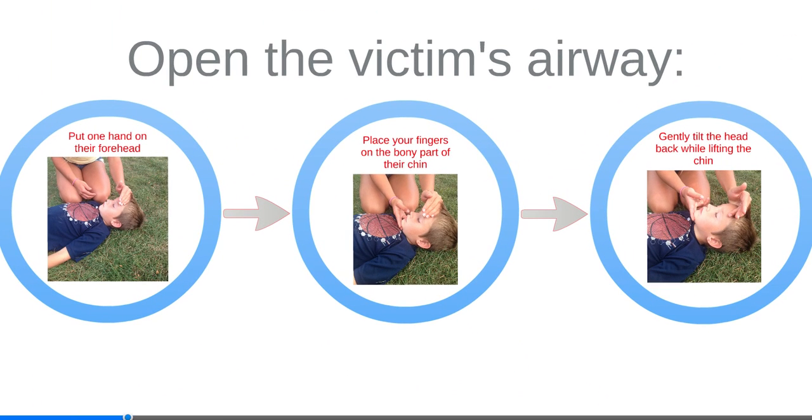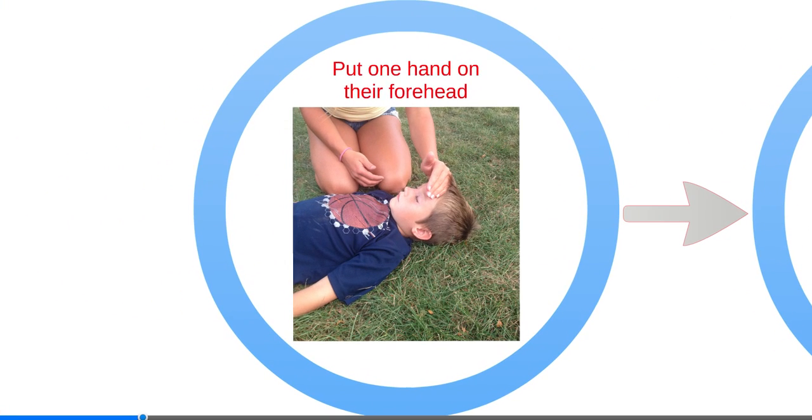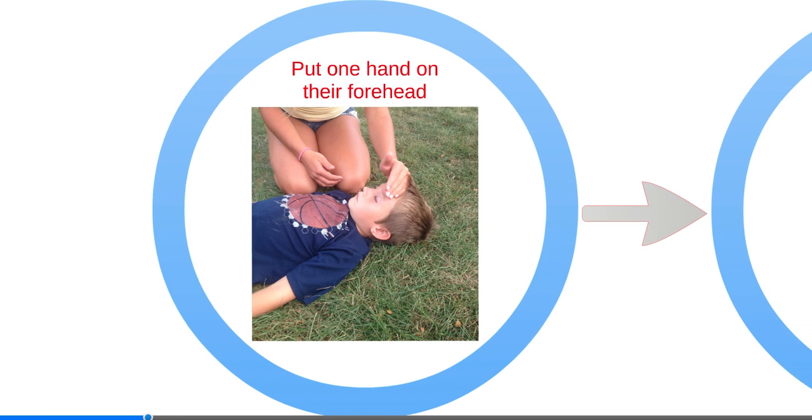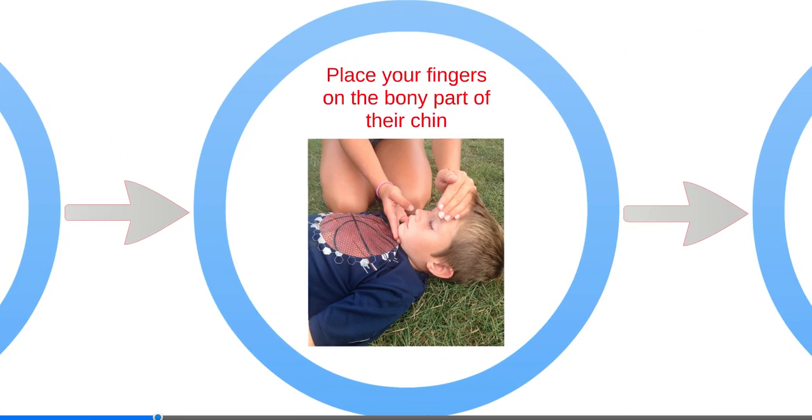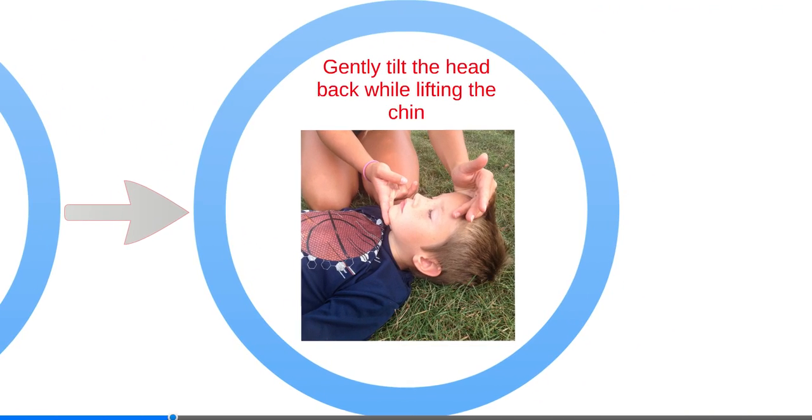To open the victim's airway, put one hand on their forehead. Place your fingers on the bony part of the chin, and gently tilt the head back while lifting the chin.